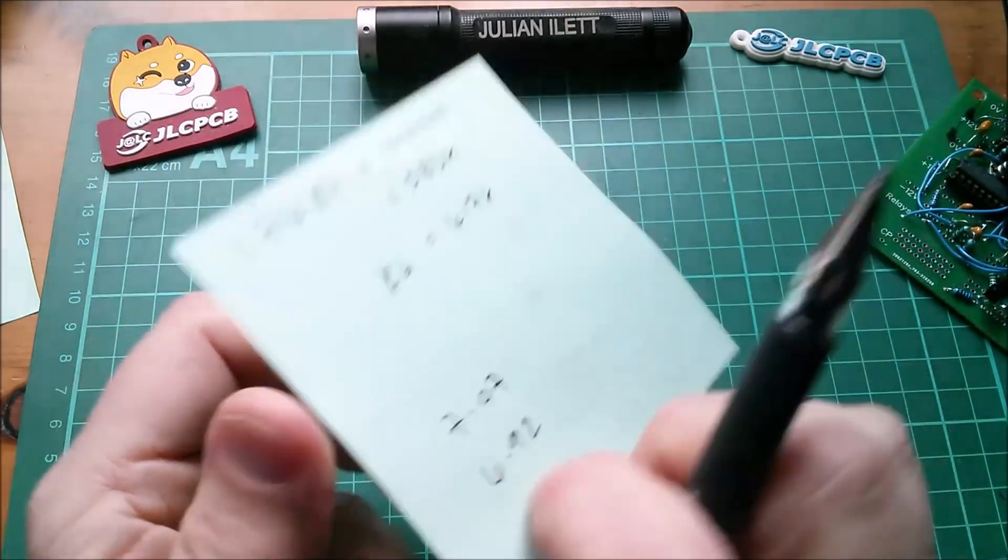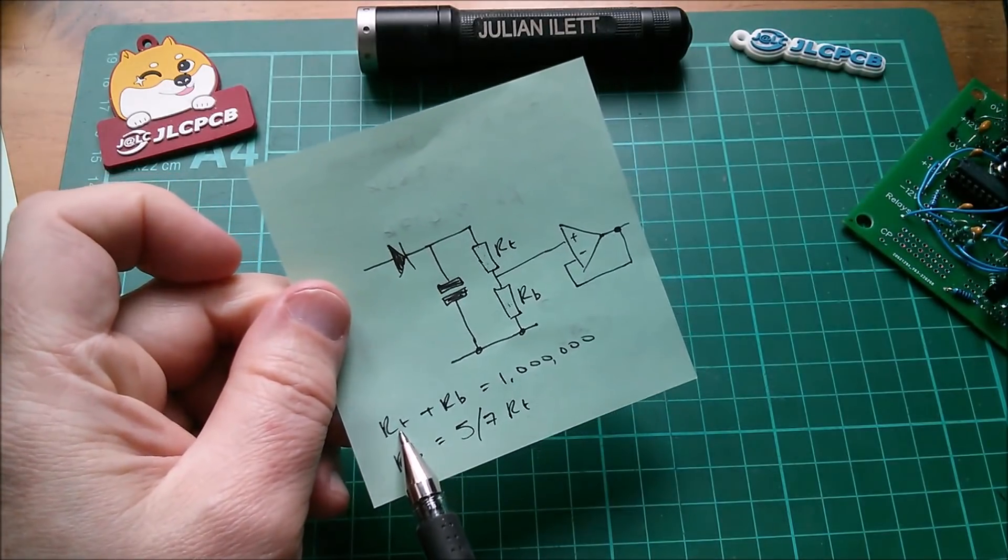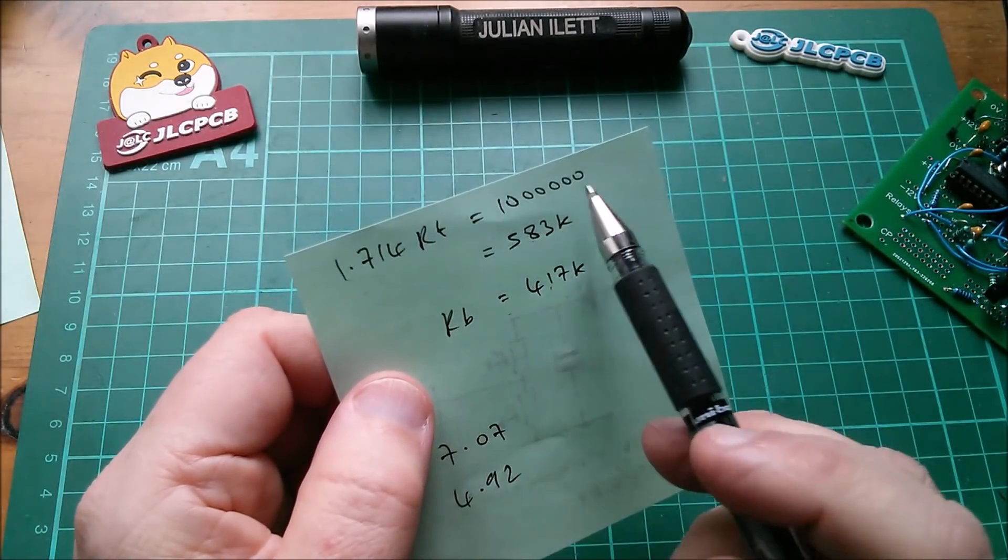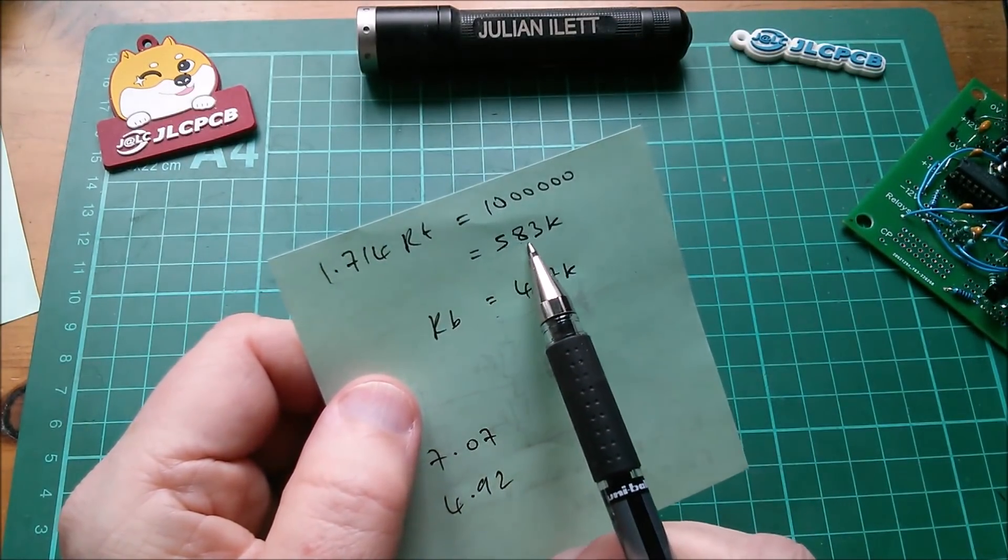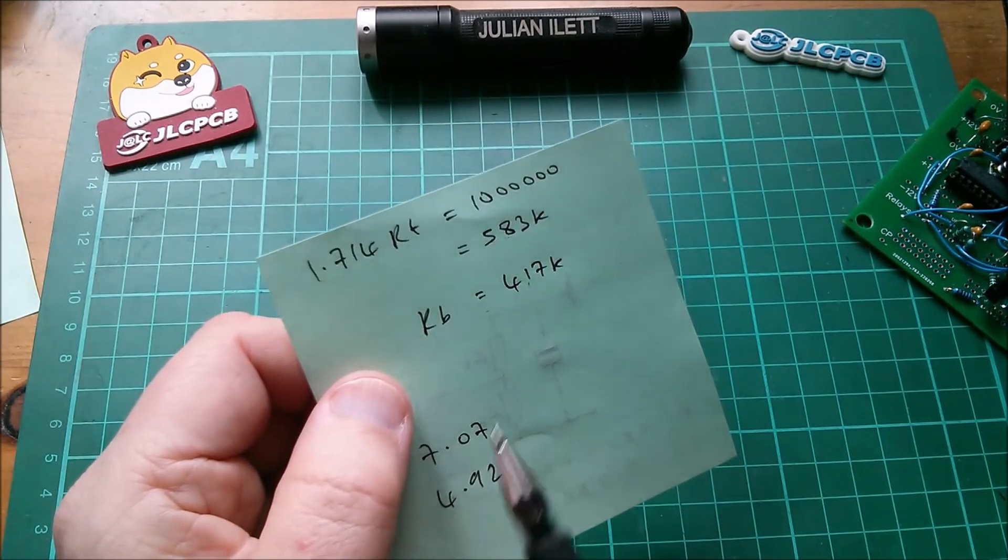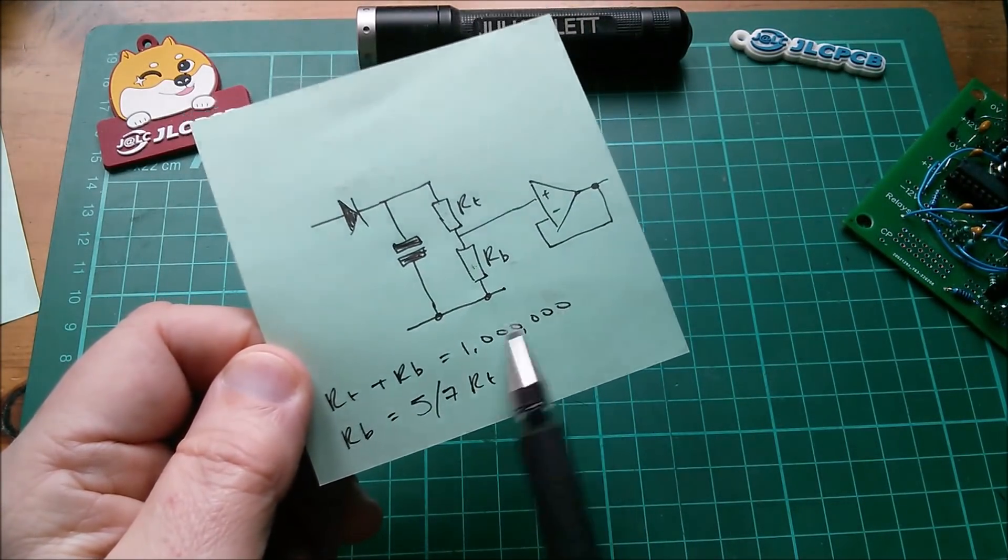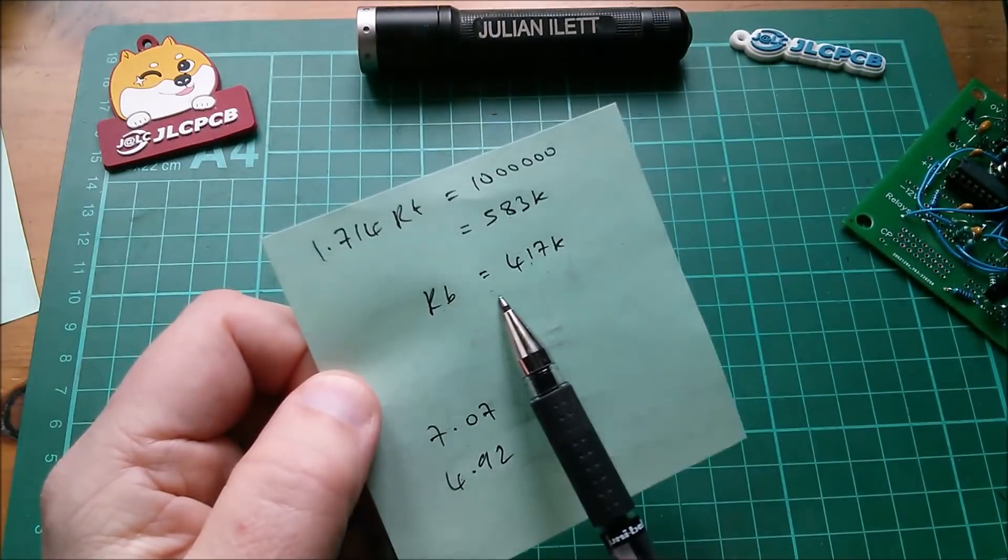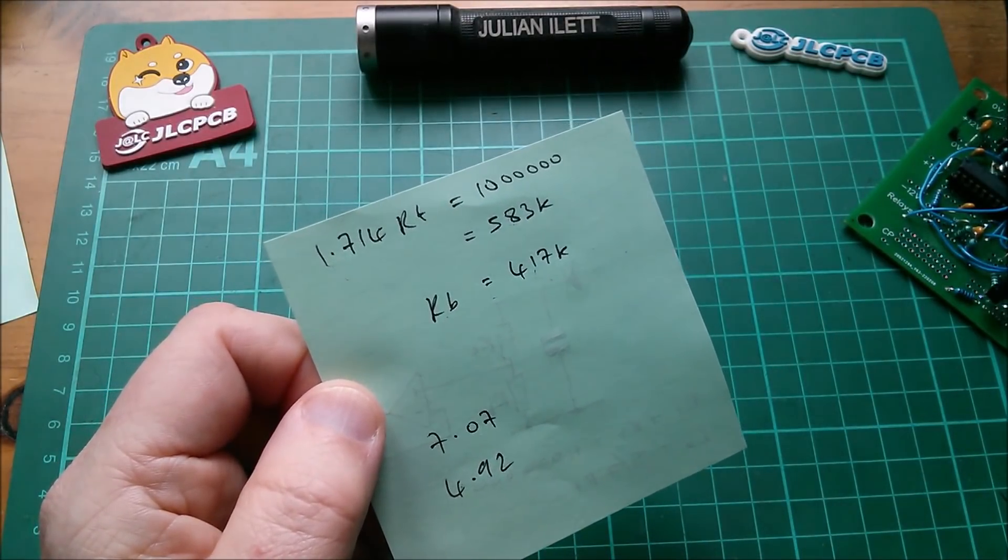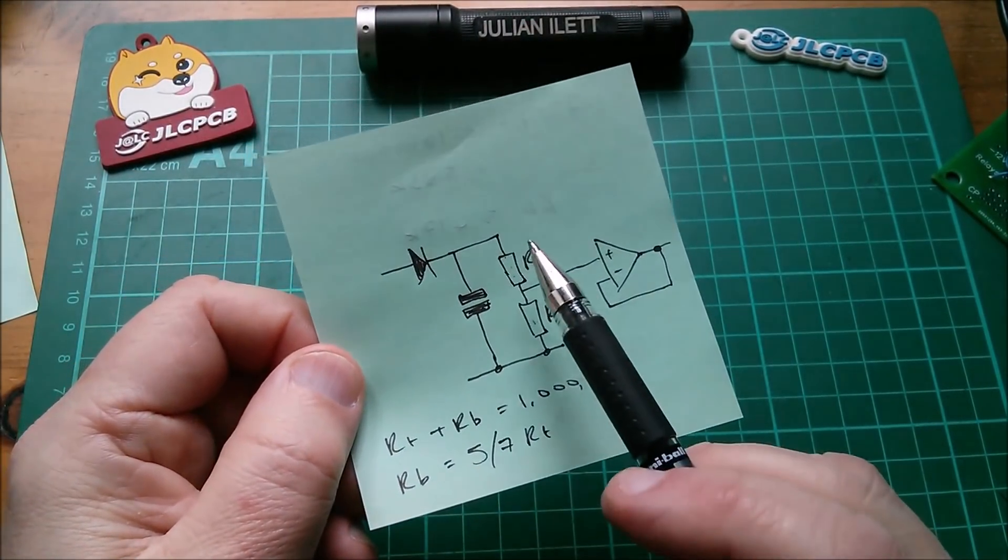What is five-sevenths? Five-sevenths is 1.714, so adding an Rt in there, Rt plus five-sevenths of Rt gives you 1.714 Rt equals a million, and that gives you approximately Rt being 583k. Now that's not a known resistor value. Rb, therefore, using this formula of a million minus Rt gives you Rb at 417k, also not a standardized resistor value.